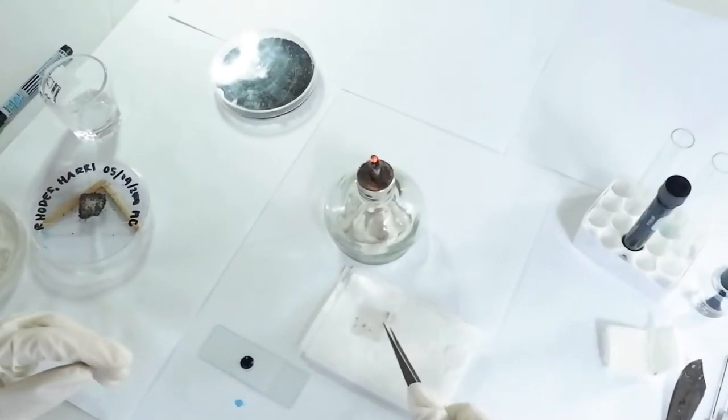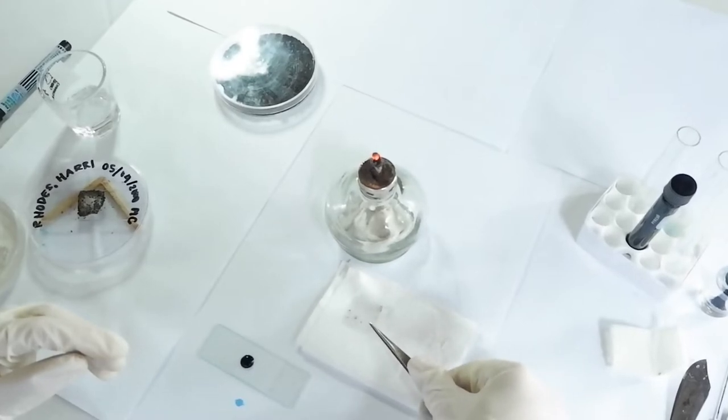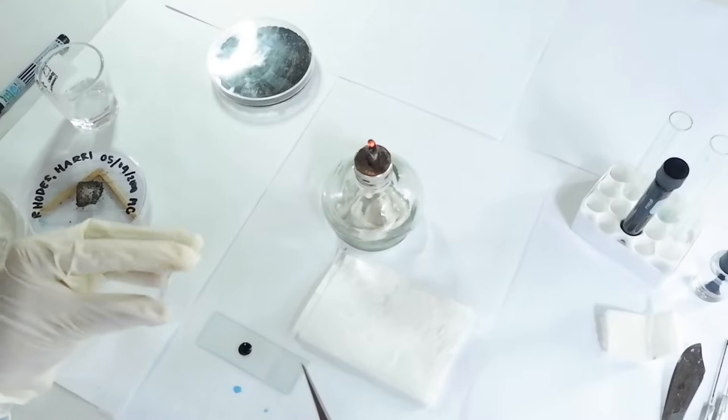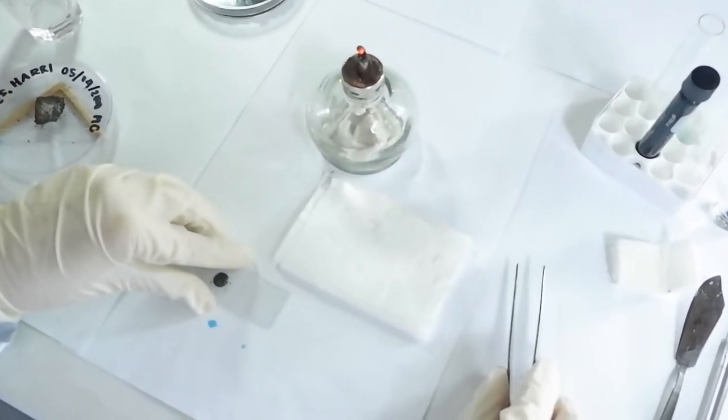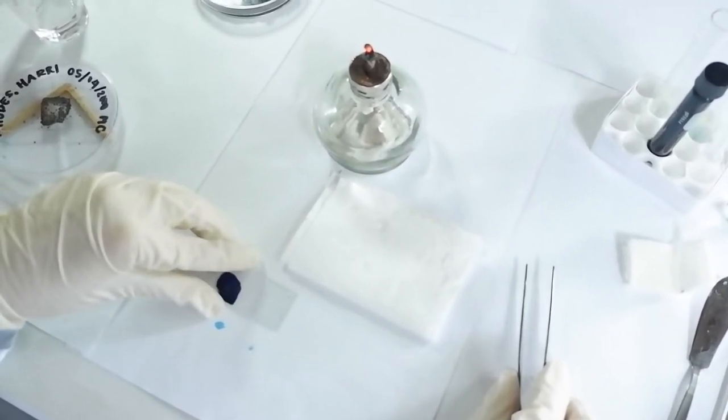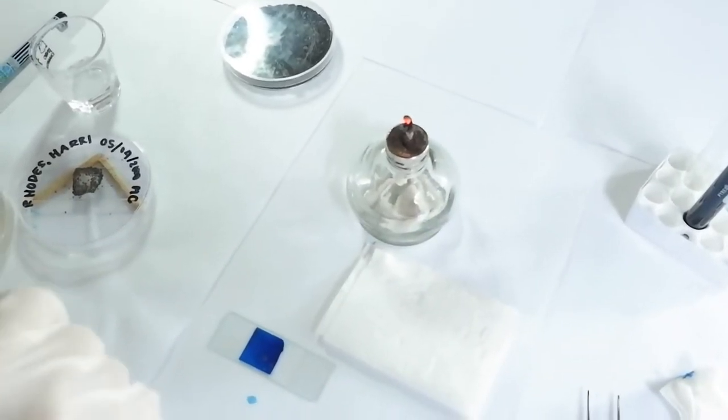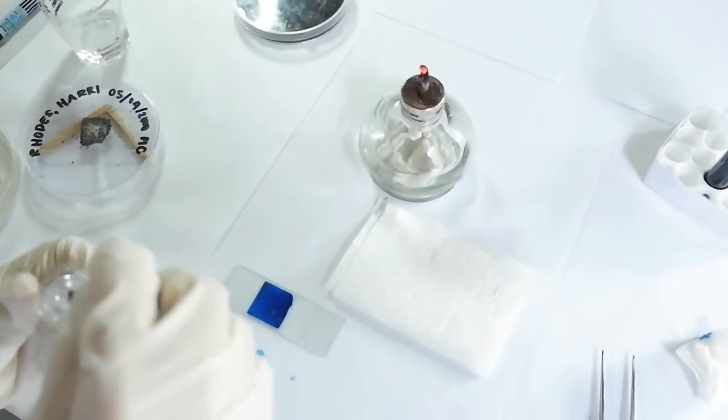Slowly place the cover slip with the culture on top of the LPCB. Avoid bubble formation and do not apply force on top of the cover slip to avoid morphologic destruction of important structures. You may now examine this under the microscope for mature spores.